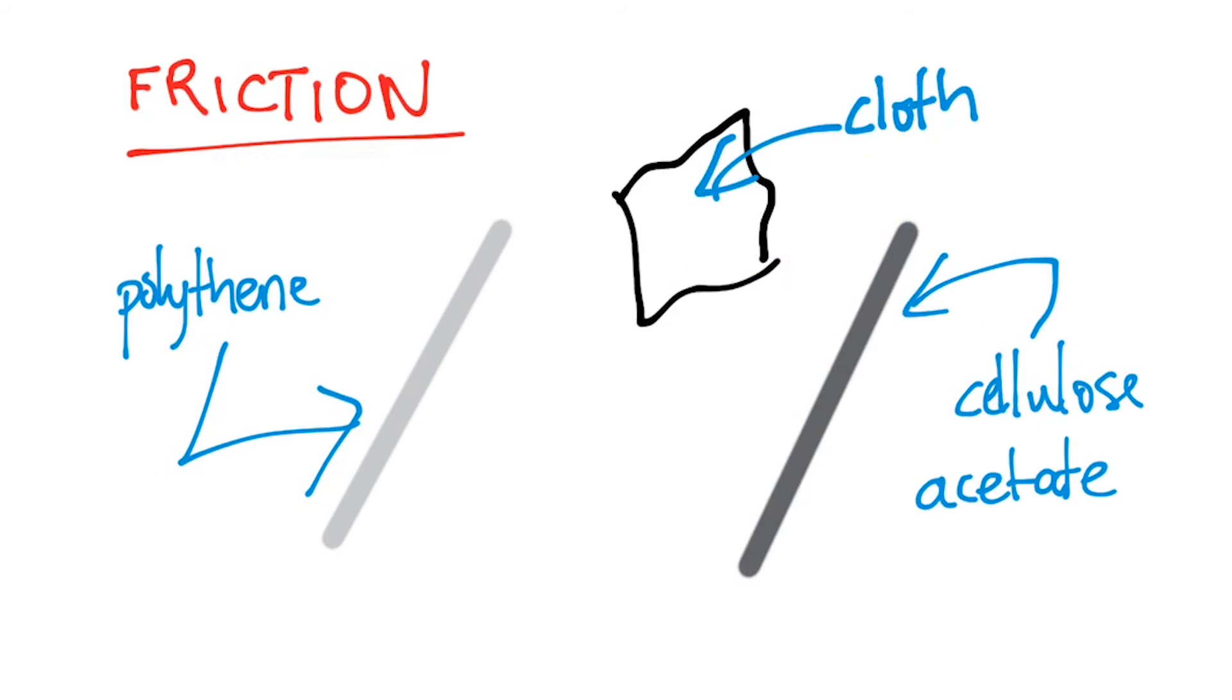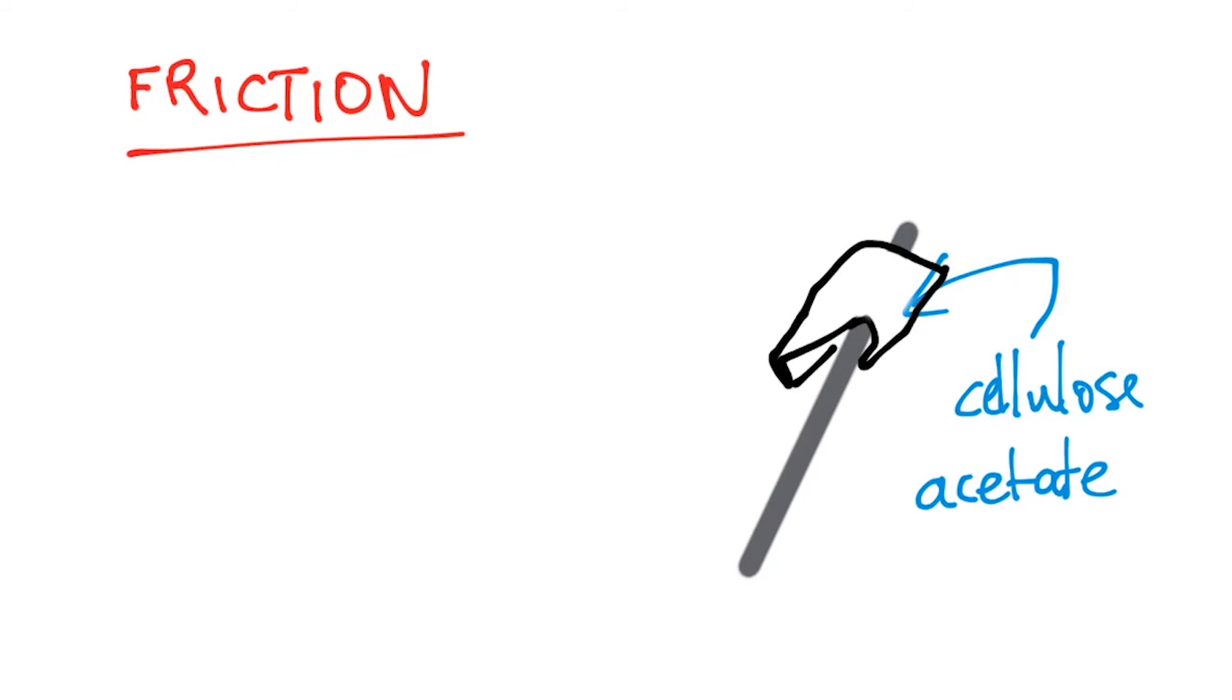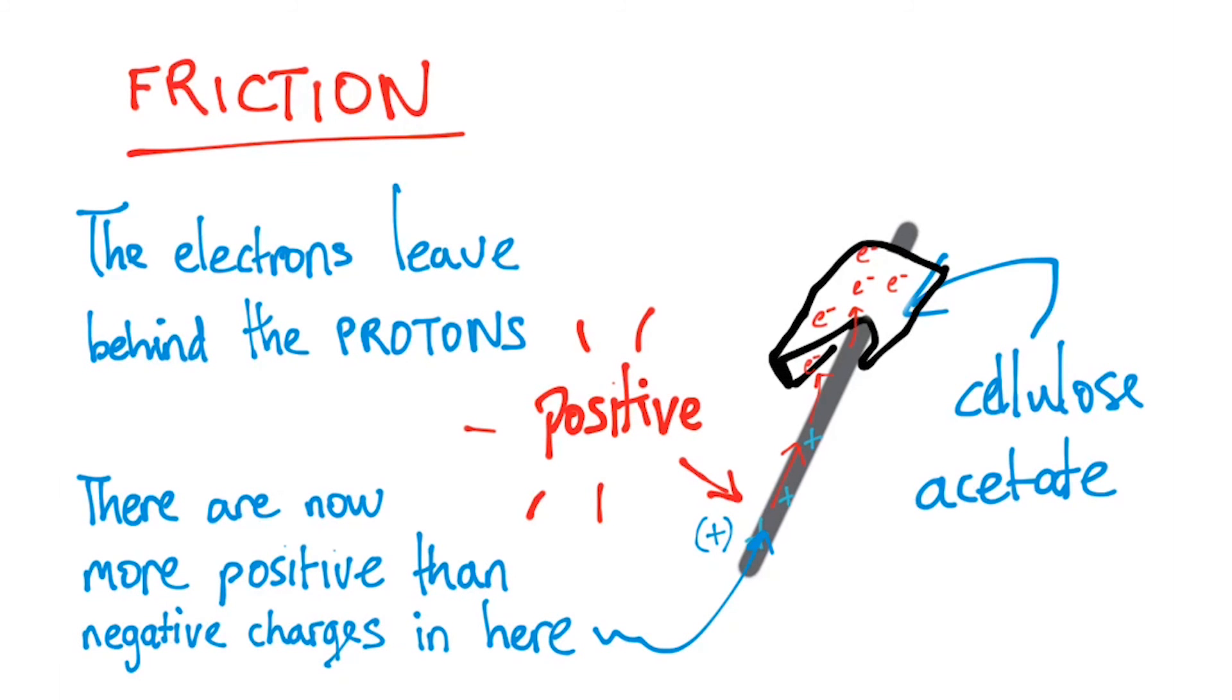The extra electrons make the polythene rather negative. But if I take the cloth now and rub it on the cellulose acetate rod, it's actually going to steal electrons from this and make this guy positive. Because if you lose electrons and your protons aren't going anywhere, the protons will start to rule the territory now because it's got more protons than electrons overall. So it's going to be positive. Electrons leave behind the protons. They are now more positive than negative charges in here.